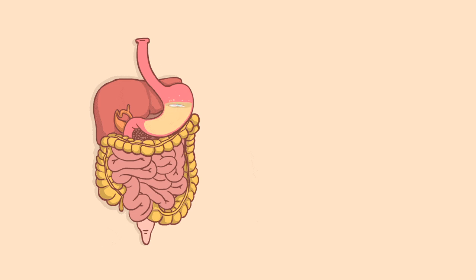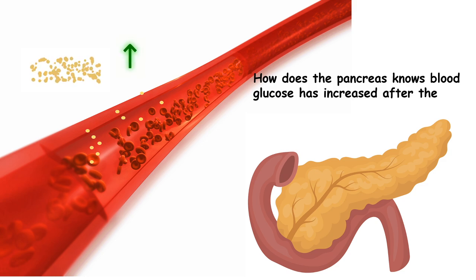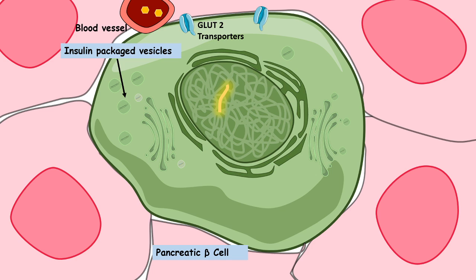For example, if you eat a donut, it gets broken down and a lot of glucose is absorbed in the intestine, elevating glucose in your bloodstream. But how does the pancreatic beta cell detect this elevation? Pancreatic beta cells have specific transporters called GLUT2 — glucose transporter 2 — depicted here as blue channels. GLUT2 allows glucose to enter from blood vessels supplying the pancreas, triggering insulin secretion.